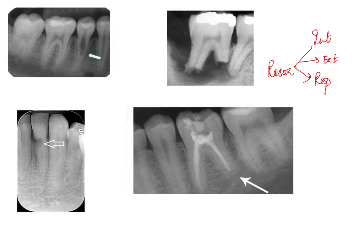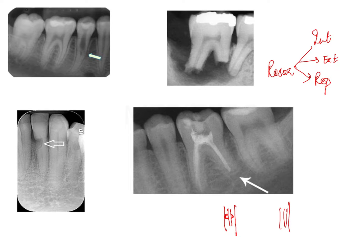Internal resorption is when, within the pulpal system — within the root canal system — there is a loss of dentine from within the tooth structure. For example, if this is your root and this is the pulpal canal, the dentine from here is lost. External resorption is when the cementum and dentine from the external surface of the root is lost; the pulpal anatomy remains normal.